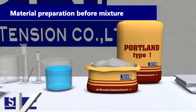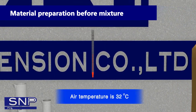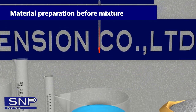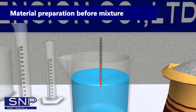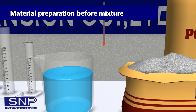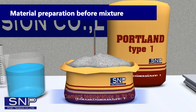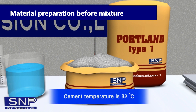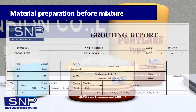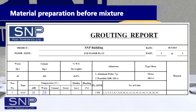Material Preparation Before Mixture: 1. Measure Air Temperature. 2. Measure Water Temperature. 3. Measure Cement Powder Temperature. After that, record all data in the Grouting Report Table.